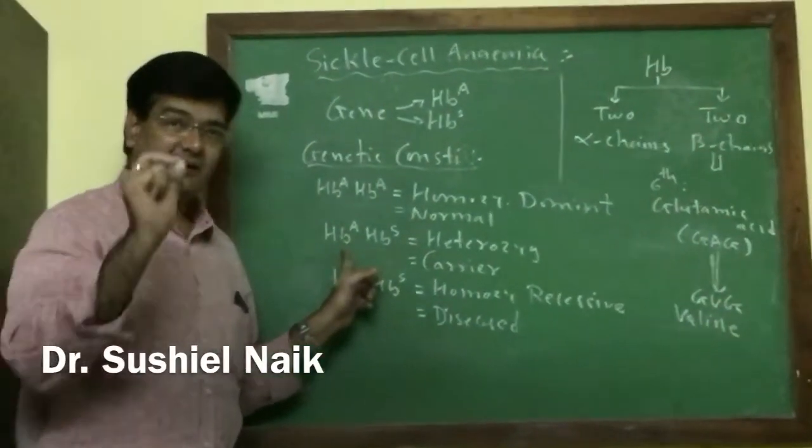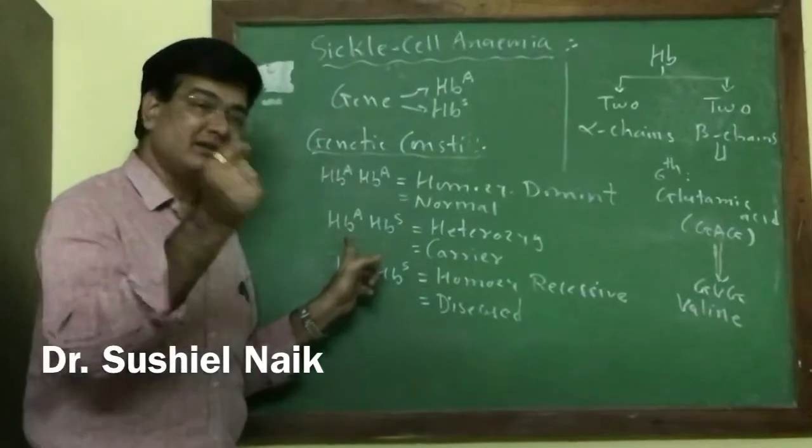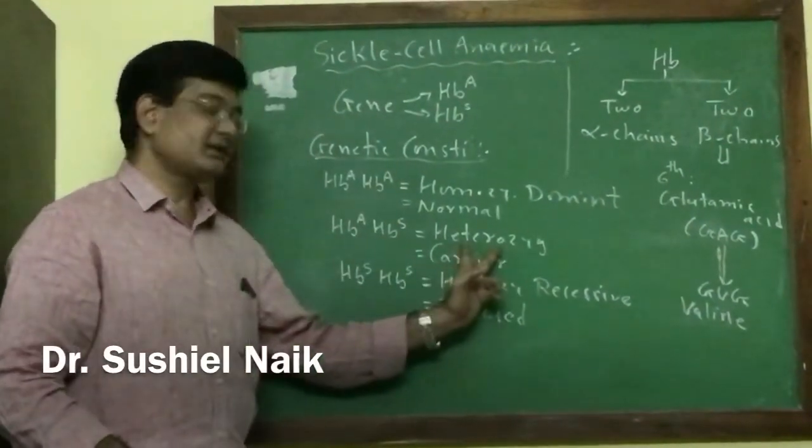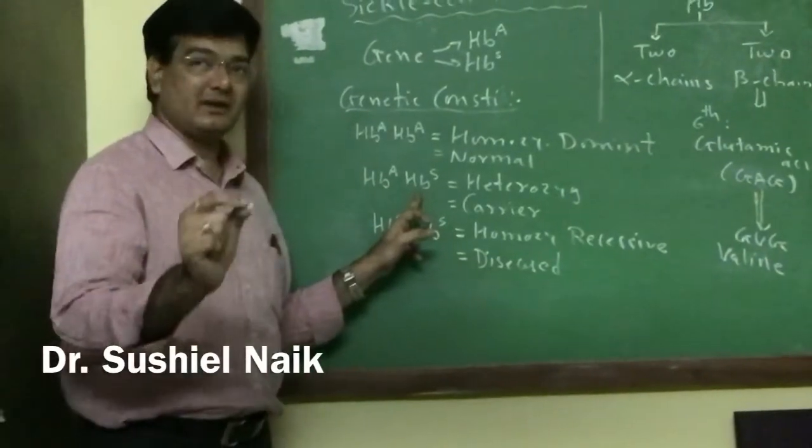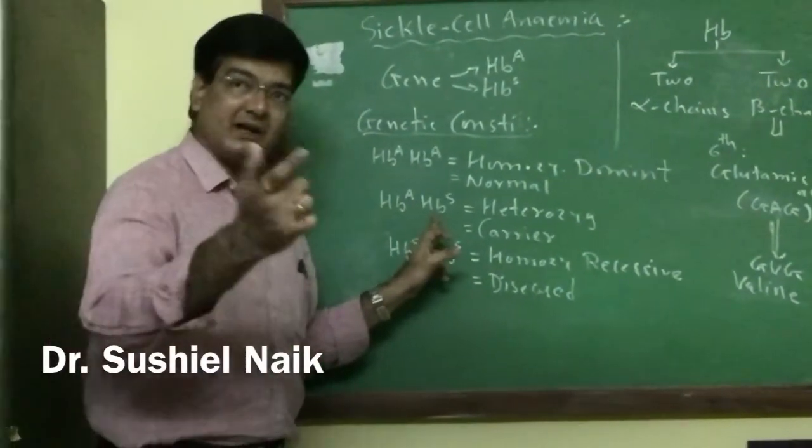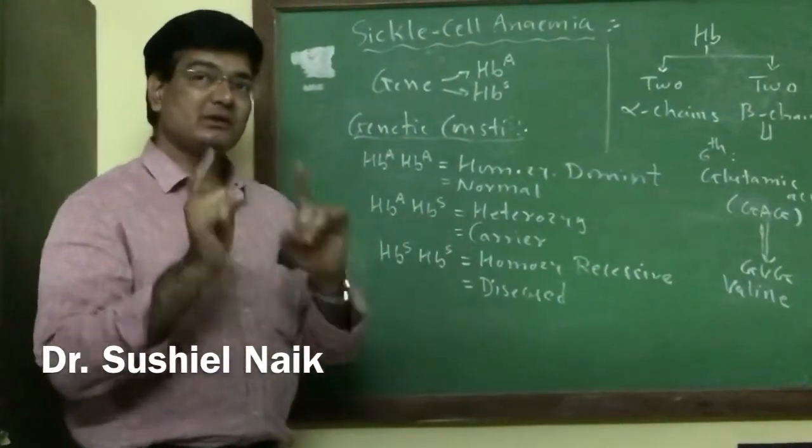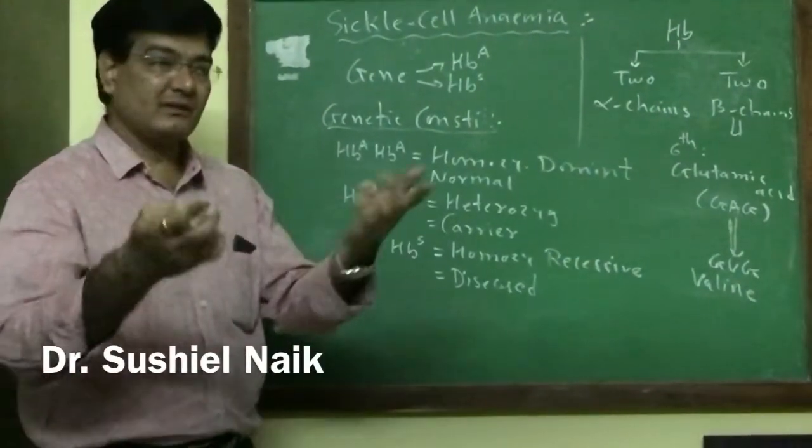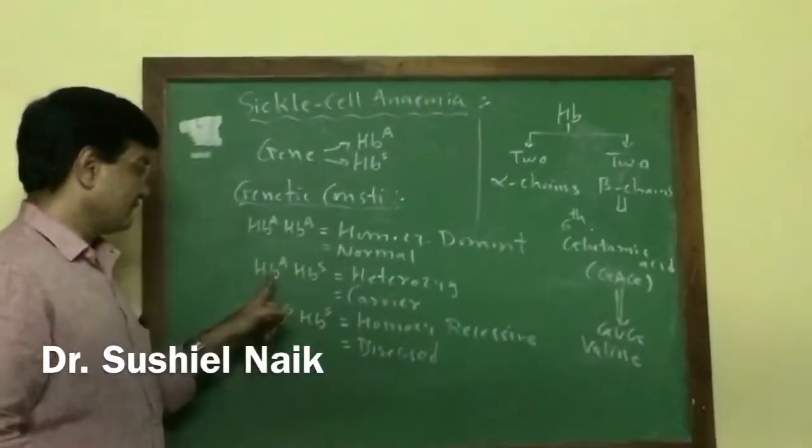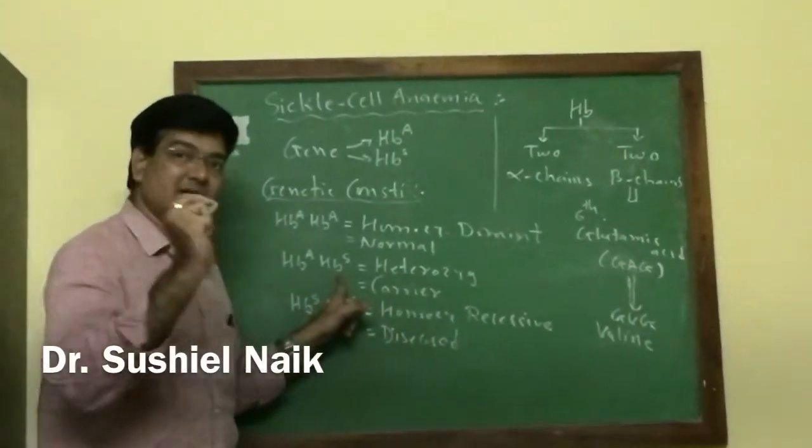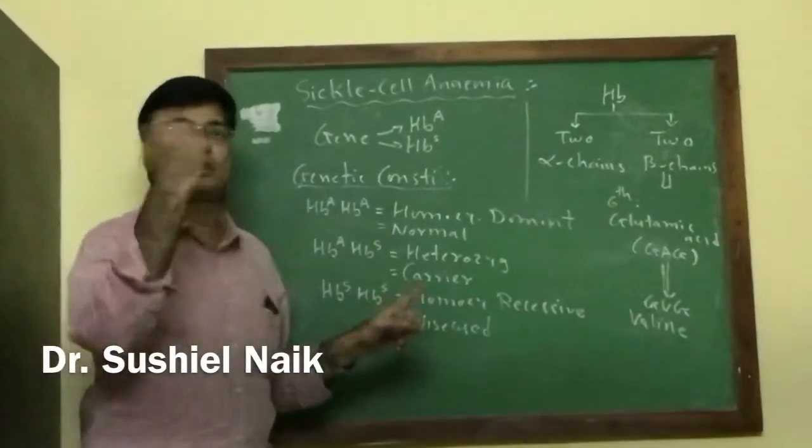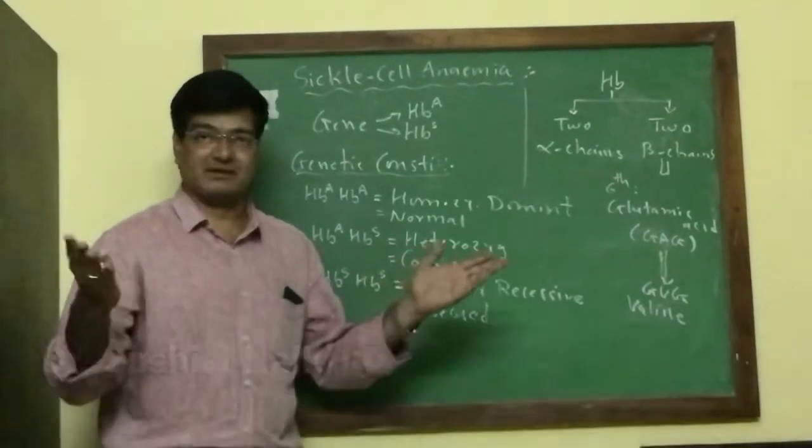There is 50% normal hemoglobin and 50% defective hemoglobin, and ultimately RBCs are defective. That's why both genes show their expression in the formation of hemoglobin. HBA produces proper hemoglobin, HBS produces defective hemoglobin, and that's why it is co-dominance - both genes express their activity.